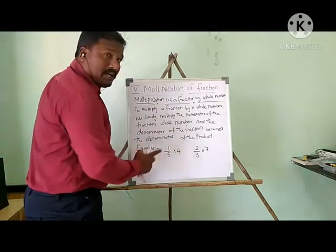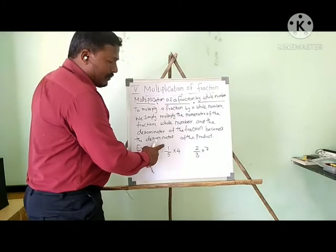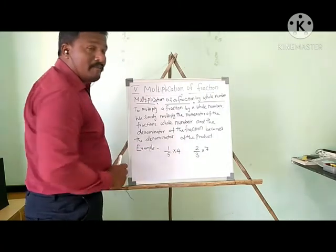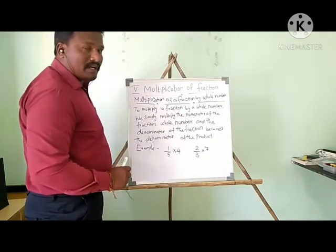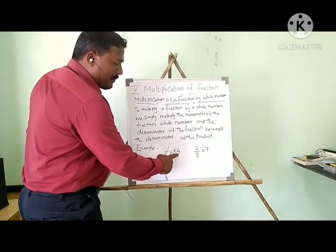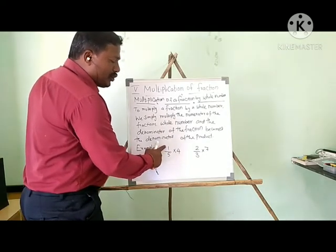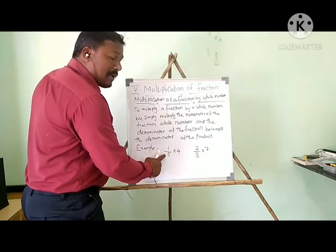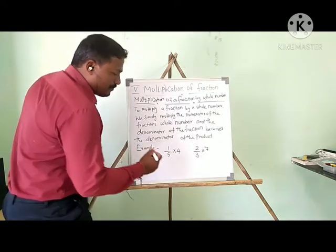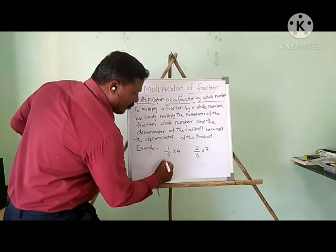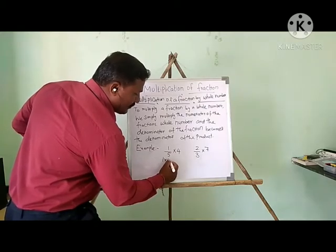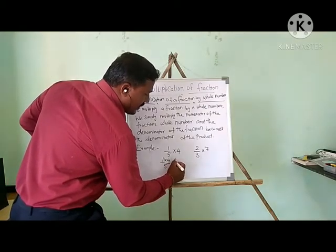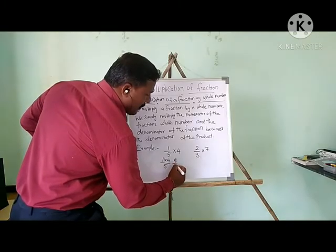For example, this is the fraction and this is the whole number: 1/5 and 4. 1/5 is the fraction, 4 is the whole number. If you multiply this, simply multiply the numerator 1 by 4 and the denominator stays the same. So 1 × 4 upon 5 gives the answer 4/5.